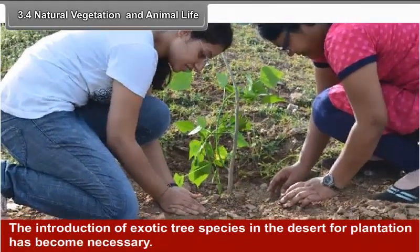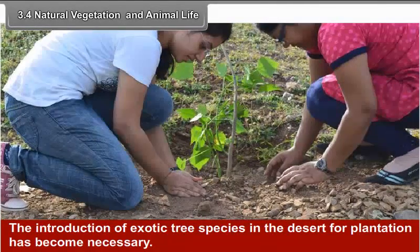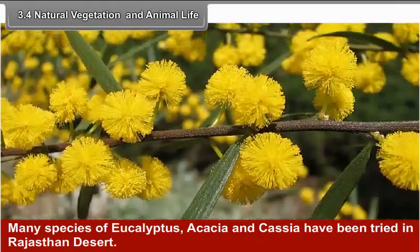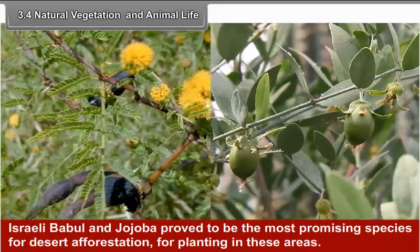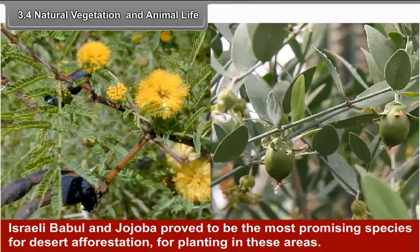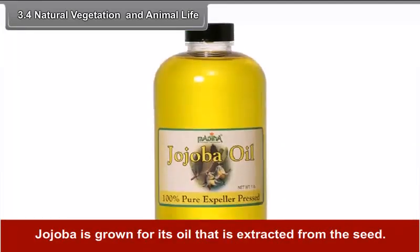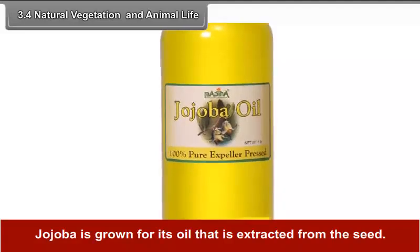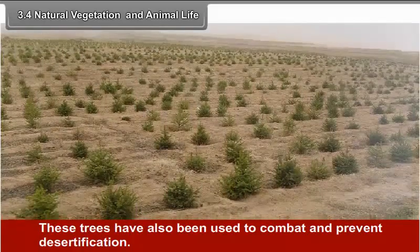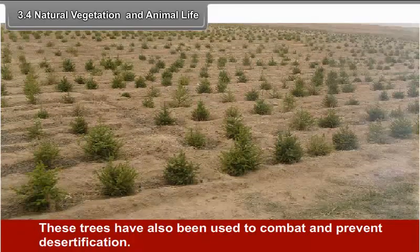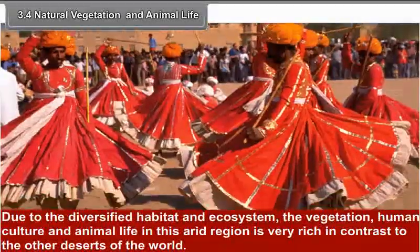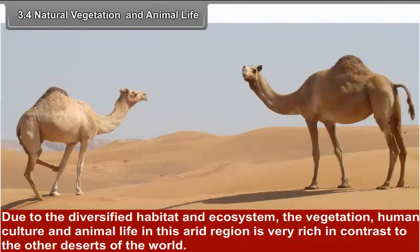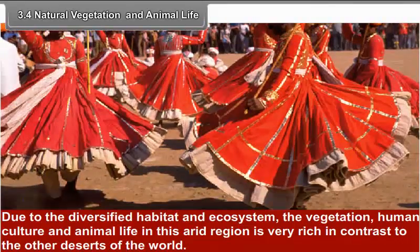The introduction of exotic tree species in the desert for plantation has become necessary. Many species of eucalyptus, acacia and cachery have been tried in the Rajasthan desert. Israeli babul and jojoba prove to be the most promising species for desert afforestation. Jojoba is grown for its oil that is extracted from the seeds. These trees have also been used to combat and prevent desertification. Due to the diversified habitat and ecosystem, the vegetation, human culture and animal life in this arid region is very rich in contrast to other deserts of the world.